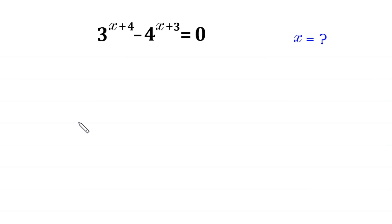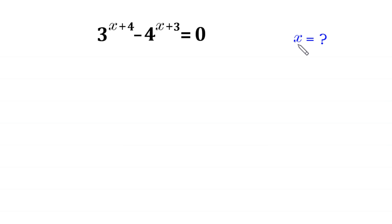Hello, welcome to how to solve this very nice exponential equation: 3 to the power x plus 4 minus 4 to the power x plus 3 equals 0. We need to find all possible values of x.